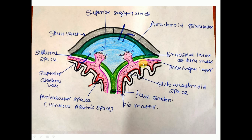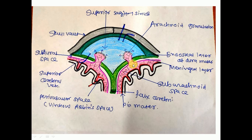The arachnoid mater is a loose, transparent, somewhat vascular membrane. It follows the contours of the brain but is not strictly adherent to the underlying brain tissue. The arachnoid mater is traversed by various septa known as arachnoid trabeculae. The space between the arachnoid mater and pia mater is known as the subarachnoid space.